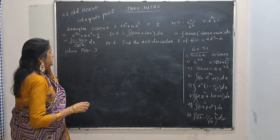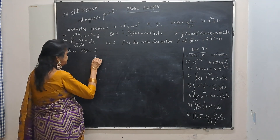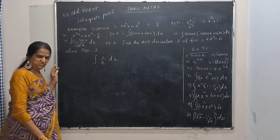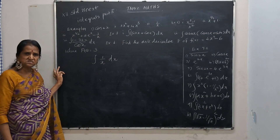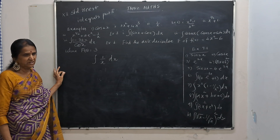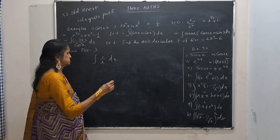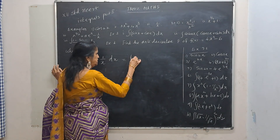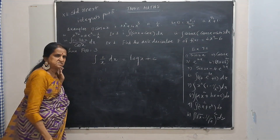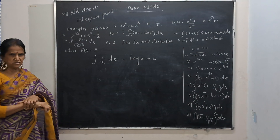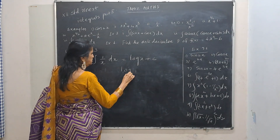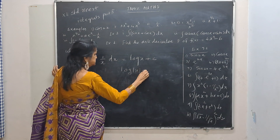Next: integrate 1 by x dx. What is the derivative of log? The derivative of log is 1 by x. So this will be log x plus c. But log is defined only for positive values, so you will have the logarithm of mod x plus c.